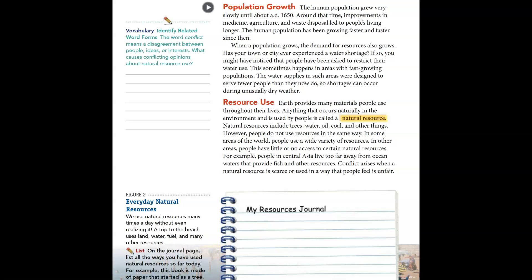Environmental issues fall into three general categories: population growth, resource use, and pollution. The human population grew very slowly until about AD 1650. Around that time, improvements in medicine, agriculture, and waste disposal led to people living longer. The human population has been growing faster and faster since then. When a population grows, the demand for resources also grows.